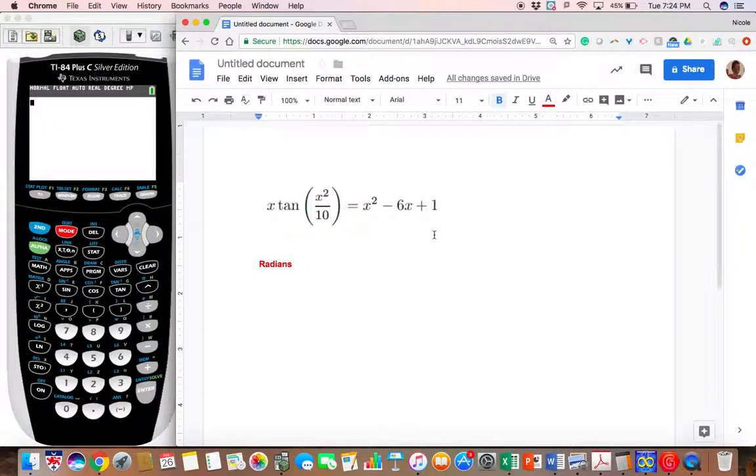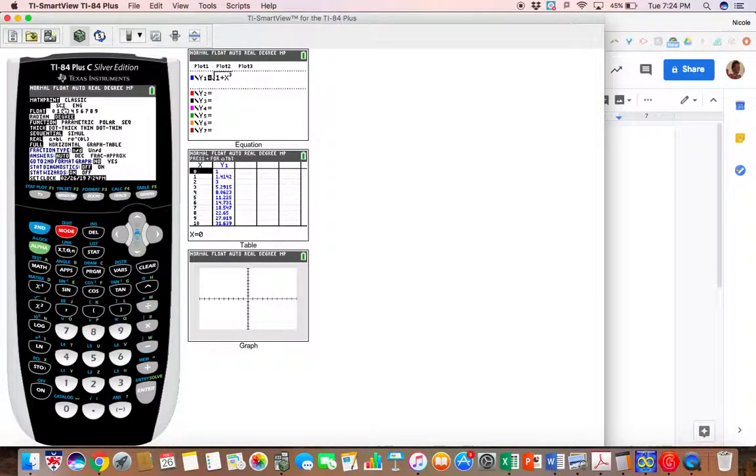You want to make sure that your calculator mode is also in radians. Go to mode and go down to where it says radians or degrees, and press enter to make sure that you are in the correct mode. Now that we are in radians, we are halfway there.